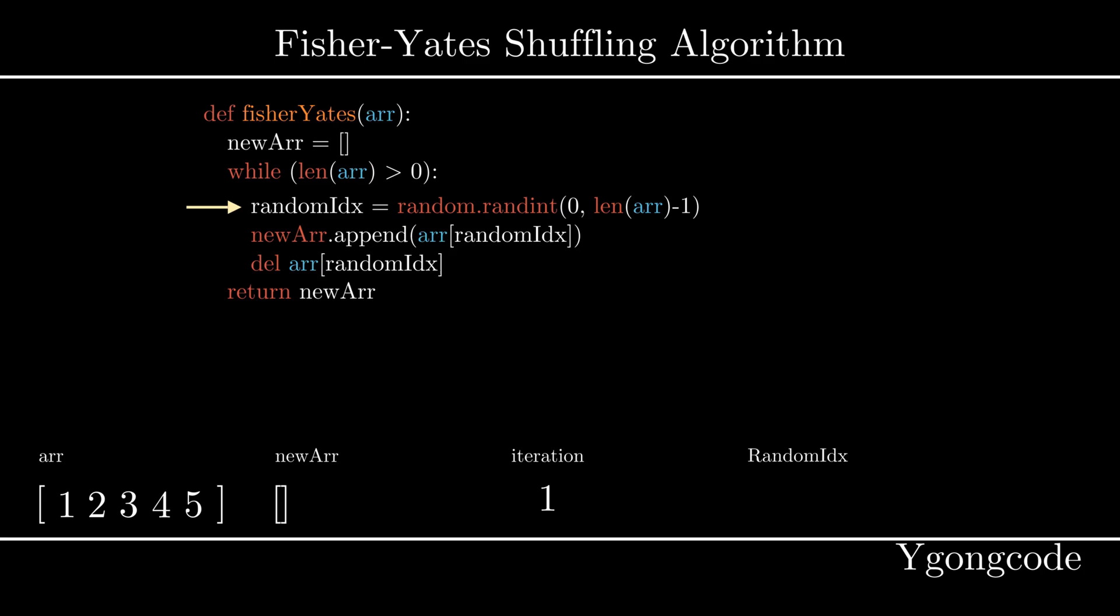In this case, the generated index is 3. Since our index is 0 based, we will append the fourth element of the input array into our new array and remove the fourth element from the input array.